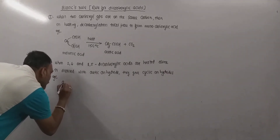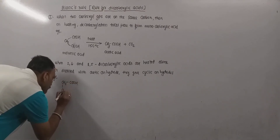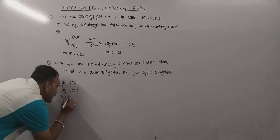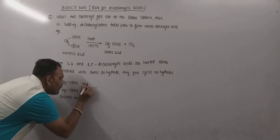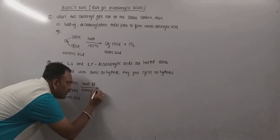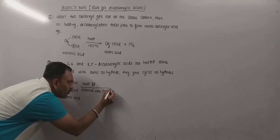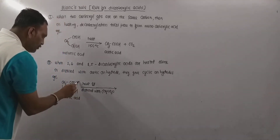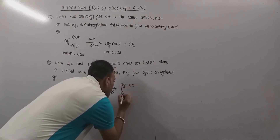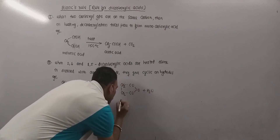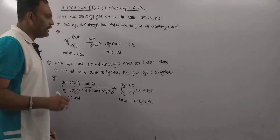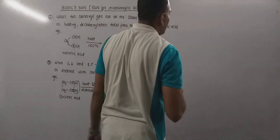For example, consider succinic acid, which is a 1,4 dicarboxylic acid. When succinic acid is heated alone or distilled with acetic anhydride, (CH3CO)2O, it undergoes dehydration to produce a cyclic anhydride. This is the key second point of Blank's Rule.